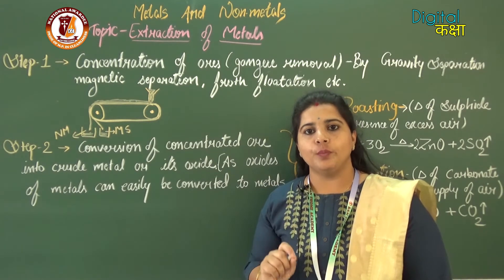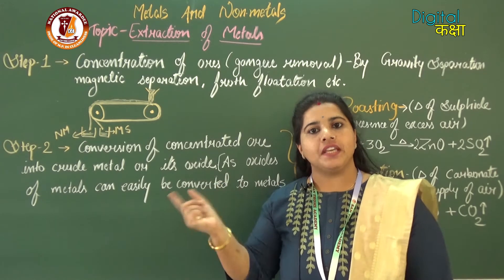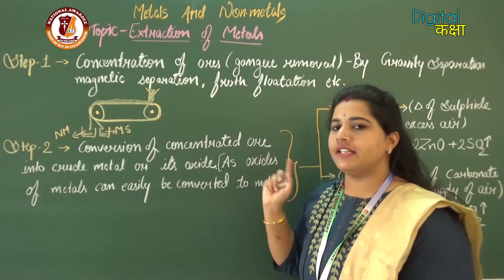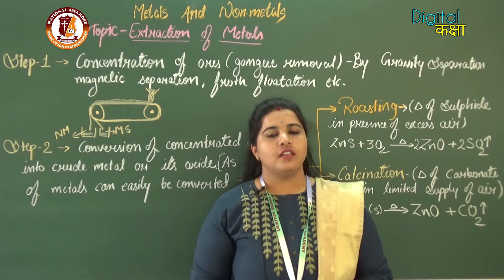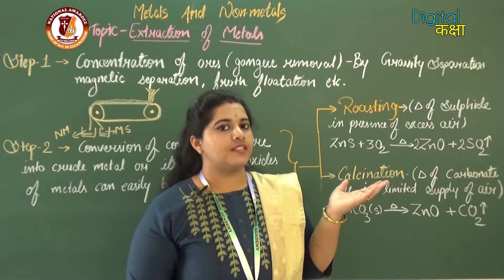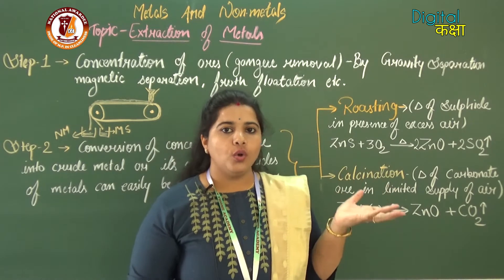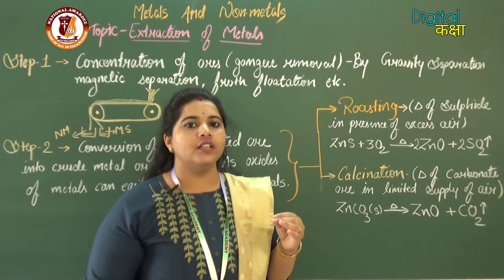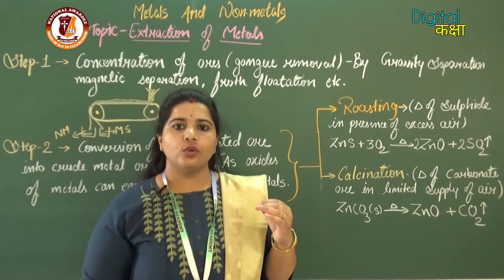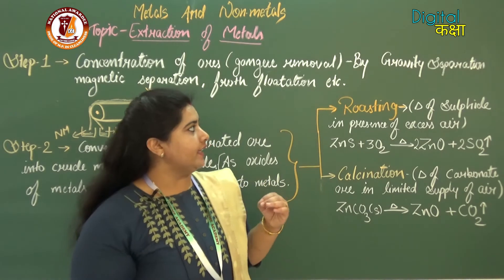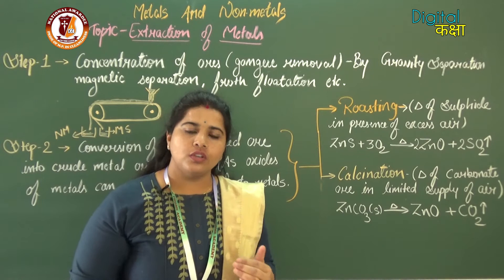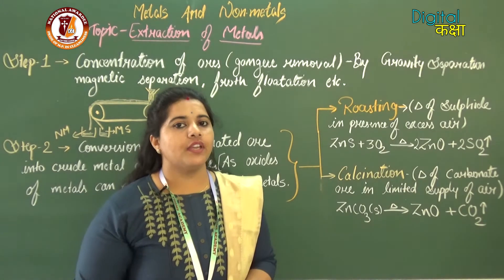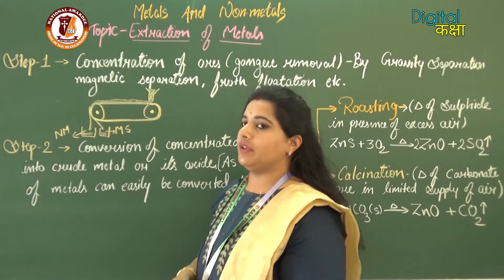One method is gravity separation. This is similar to how we used to clear stones from wheat by picking them out by hand. In gravity separation, the ore is placed in a strainer and water is flowed over the metal ore. The heavier particles flow down along with the water while the lighter particles remain on the strainer, separating the ore.